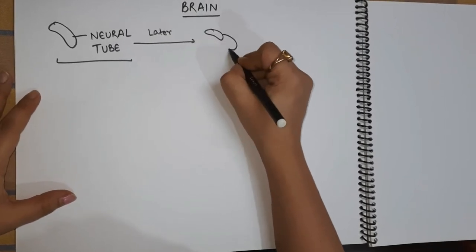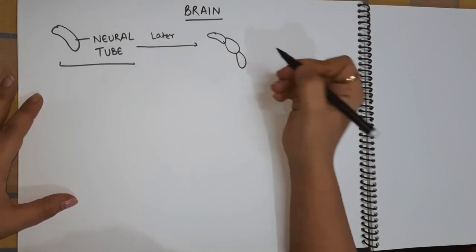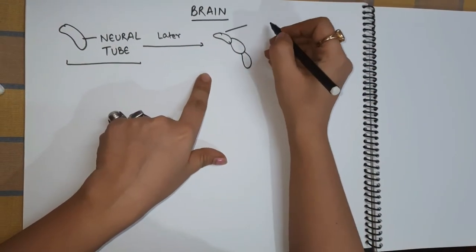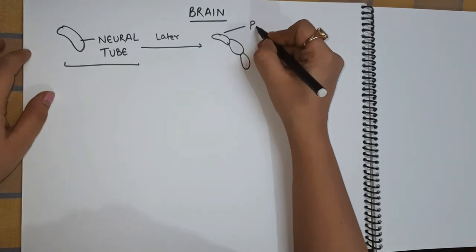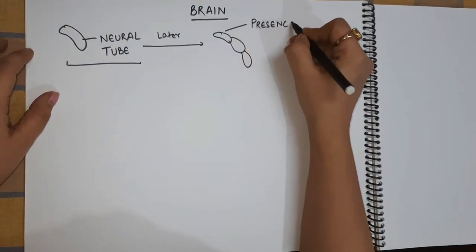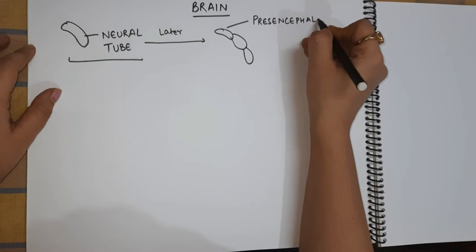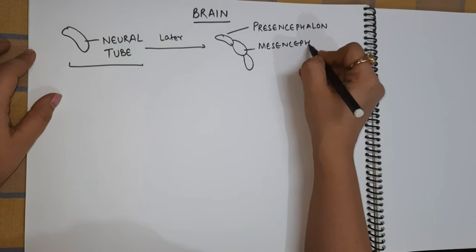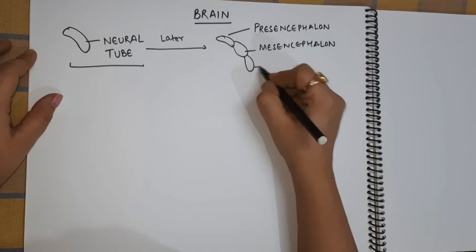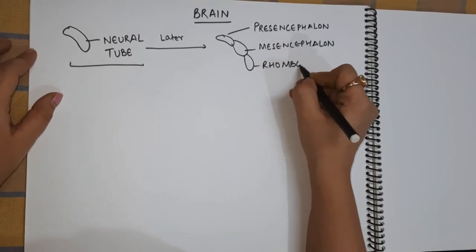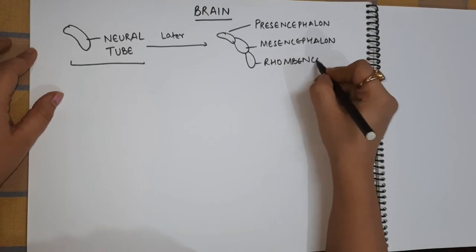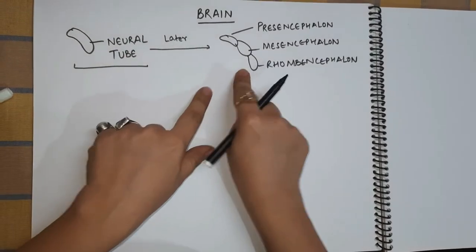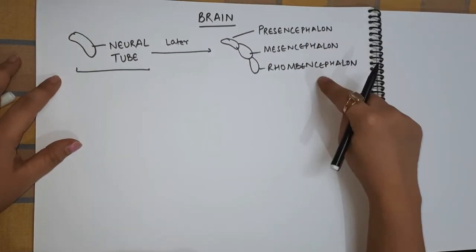Inside the embryo, the neural tube grows into three divisions which are called the three vesicles of the brain. These are preferably called as prosencephalon, mesencephalon, and rhombencephalon. So these are the three structures or vesicles which are developed from the neural tube.